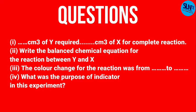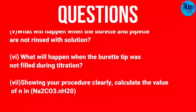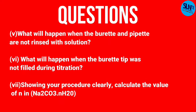Fourth question: what is the purpose of the indicator in this experiment? Fifth question: what will happen when the burette and pipette are not rinsed with the solutions? Sixth question: what will happen when the burette tip was not filled during titration — the burette tip is the space at the bottom of the burette. Seventh question: showing your procedure clearly, calculate the value of n in hydrated sodium carbonate.